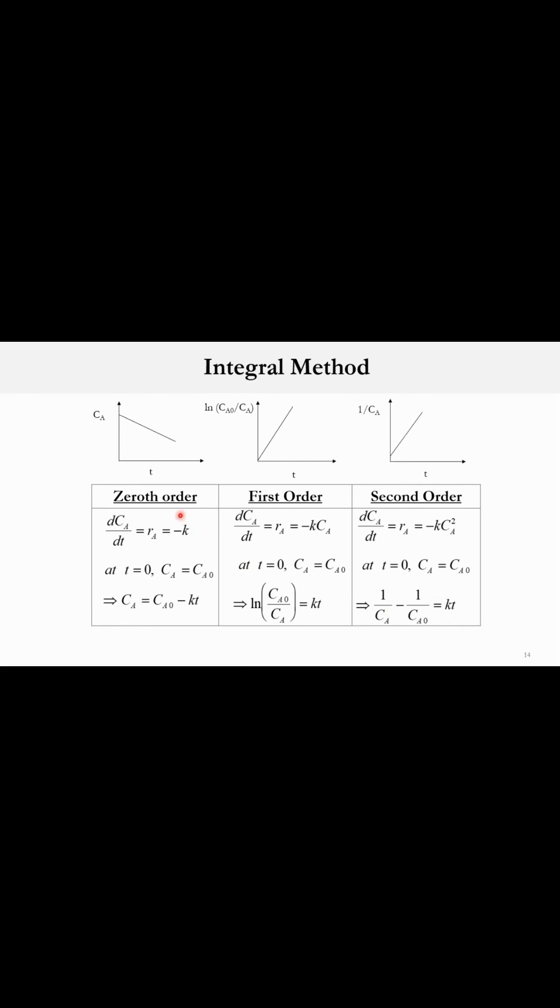If we assume the reaction is zero order, the plot should be linear between time and Ca. For first order, the graph is plotted between t and ln(Ca0/Ca), and if it's linear, it's first order. For second order, the plot is between t and 1/Ca, which should also be linear. If none of these produce a linear plot, we cannot use the integral method and must use another technique.